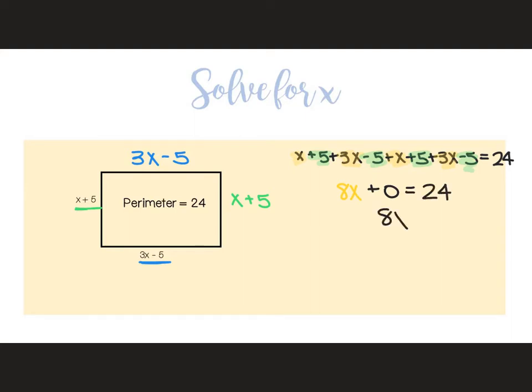I don't really need to write out the plus zero, and then I have equals 24. So I really just have eight x equals 24. Then I divide both sides by eight, and x equals three.